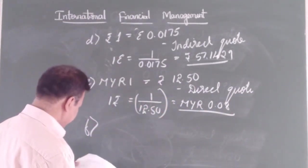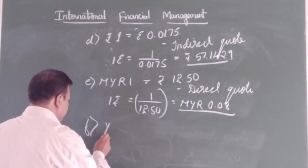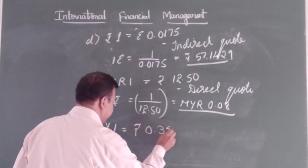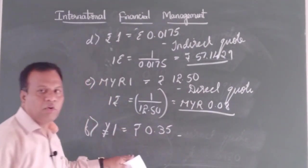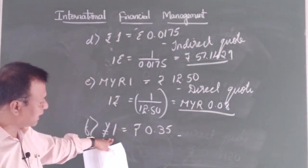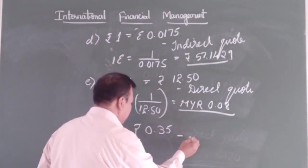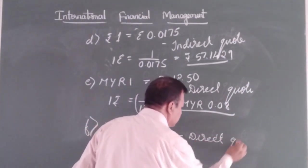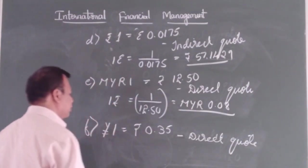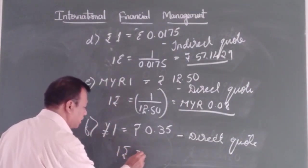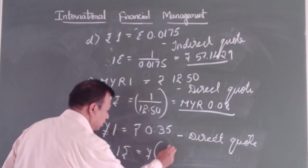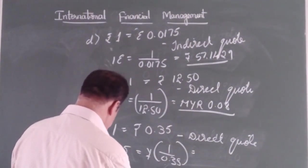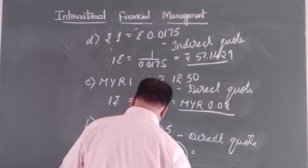The last one is: yen 1 is equal to rupees 0.35. This is expressed in terms of 1 unit of foreign currency, so it is a direct quote. The corresponding indirect quote is: 1 rupee is equal to how many yen? The answer is 2.8571.